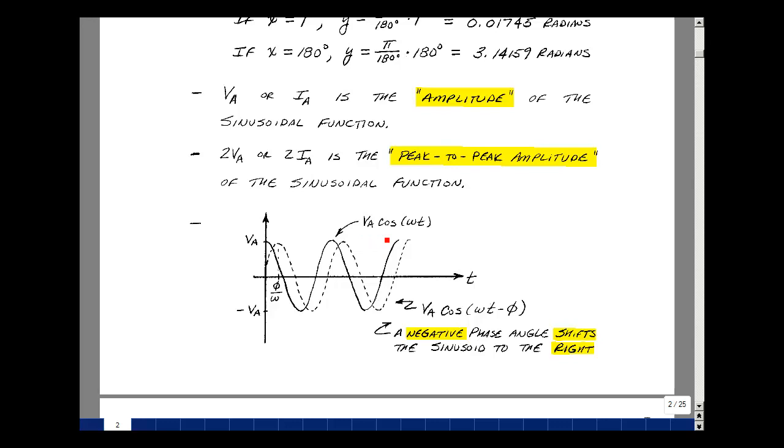Here I sketched v sub a times the cosine of omega t. When t is equal to 0, we get 1 times v sub a, and here's that cosine going up and down. I'm going to sketch with this dotted cosine wave, a cosine that has a phase angle of minus phi. And that causes the cosine to shift to the right. Again, you could set this equal to 0 and solve for the value of t, and that would correspond to phi over omega. That's where this value of 1 times v sub a is. If the phase angle were positive, we'd actually shift to the left.